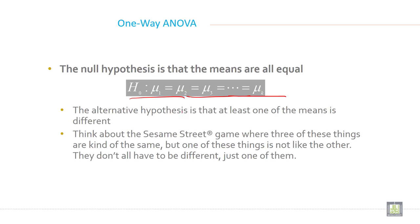And the alternate hypothesis is that at least one of the means is different. This will be alternate hypothesis. Think about the Sesame Street game, where three of these things are kind of the same, but one of these things is not like the others. They don't all have to be different, just one of them.